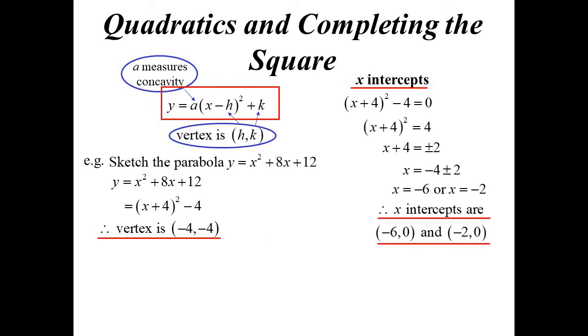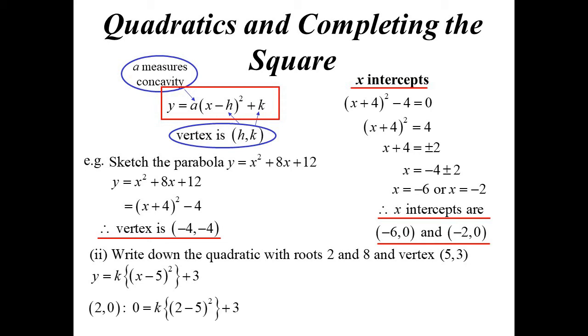The question where we said write down the quadratic whose roots are 2 and 8 and the vertex is (5, 3). Well if I know the vertex is (5, 3), then it must be in the form some constant times (x minus 5) squared plus 3. They've told me the roots are 2 and 8—I only really need one of them. So I'll use the point (2, 0).